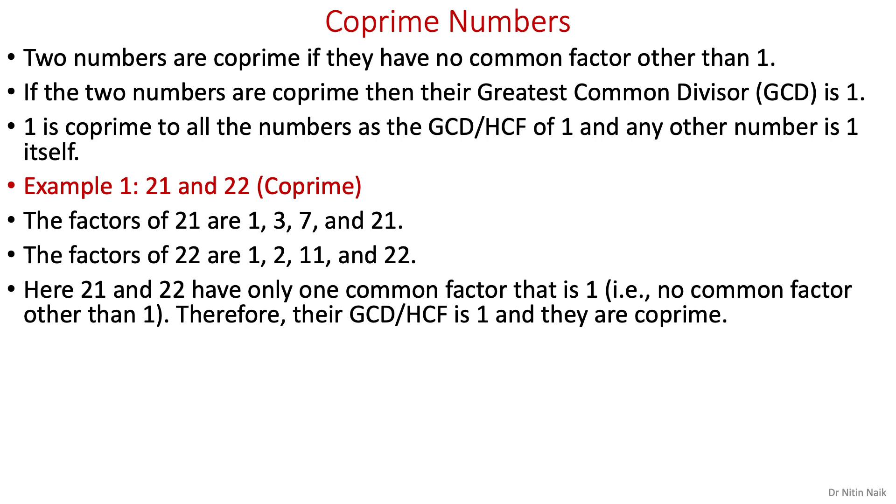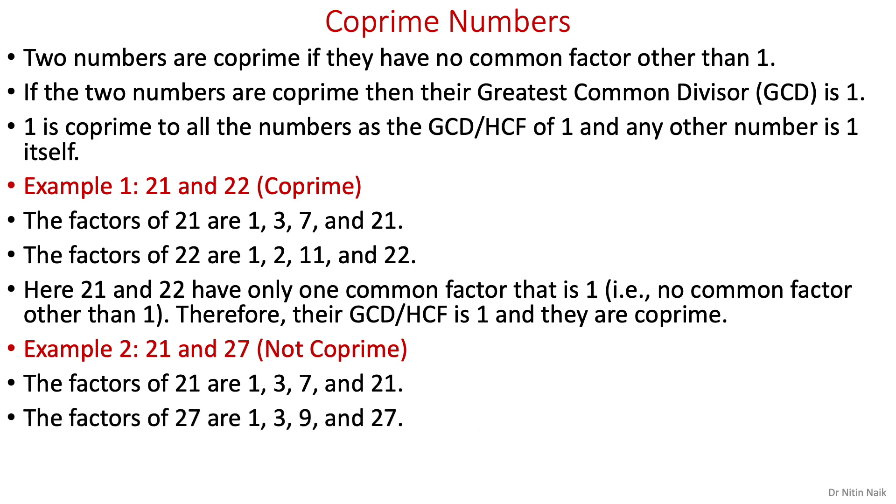Now look at the second example of not co-prime. The numbers are 21 and 27. Find the factors. We already know the factors of 21. Find the factors of 27. Here, we have 3 as the common factor of both, therefore these two numbers are not co-prime because they have one factor, 3, other than 1.